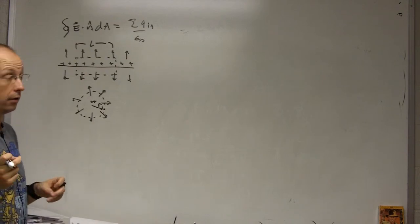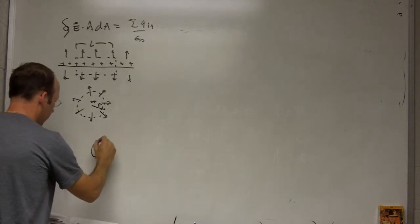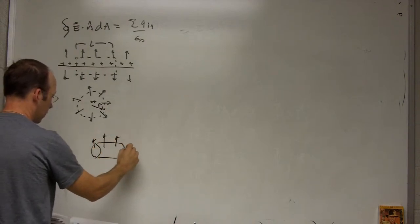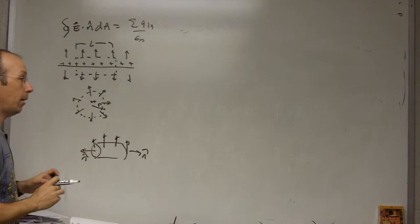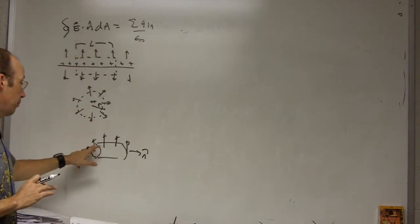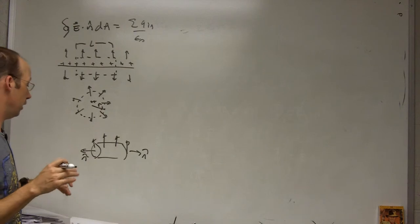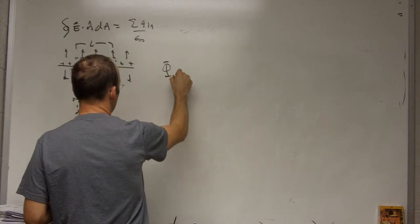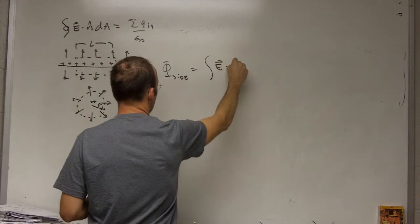So again we're going to have to do three fluxes. The end caps plus the sides. But in this case let's look at the ends. Here I have the electric field like that. So here n hat is that way, n hat is that way. On the end caps the flux E dot n hat is perpendicular so the flux is zero. So the flux on the end caps is zero. So all I need to worry about is the sides.